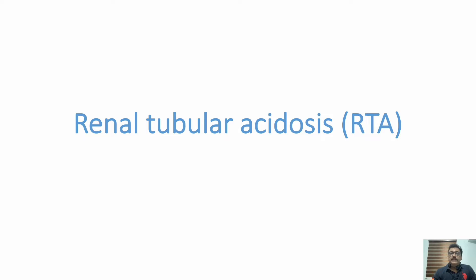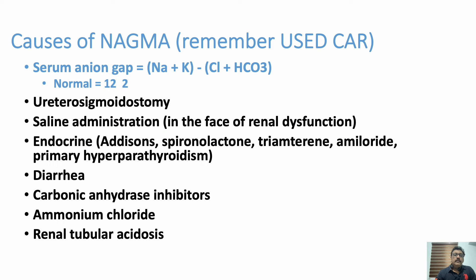Welcome to ATCM, the emergency medicine channel. Today we discuss one important cause for normal anion gap metabolic acidosis: renal tubular acidosis. First, we should know how to diagnose a normal anion gap metabolic acidosis. Whenever there is metabolic acidosis, pH is low, bicarbonate is low, and to compensate, carbon dioxide is also low.